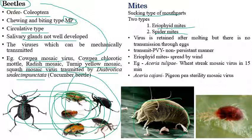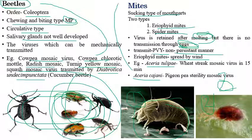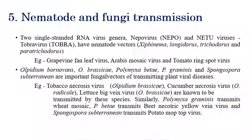Mites consist of sucking-type mouthparts. Two main types of mites are involved: eriophyid mites and spider mites. The virus is retained after molting, but there is no transmission through eggs reported so far. Virus transmission occurs only during the molting stage. Mite transmission of virus occurs in a non-persistent manner. Eriophyid mites can also spread by wind due to their lightweight. Aceria tulipae transmits wheat streak mosaic virus, and Aceria cajani transmits pigeonpea sterility mosaic virus.